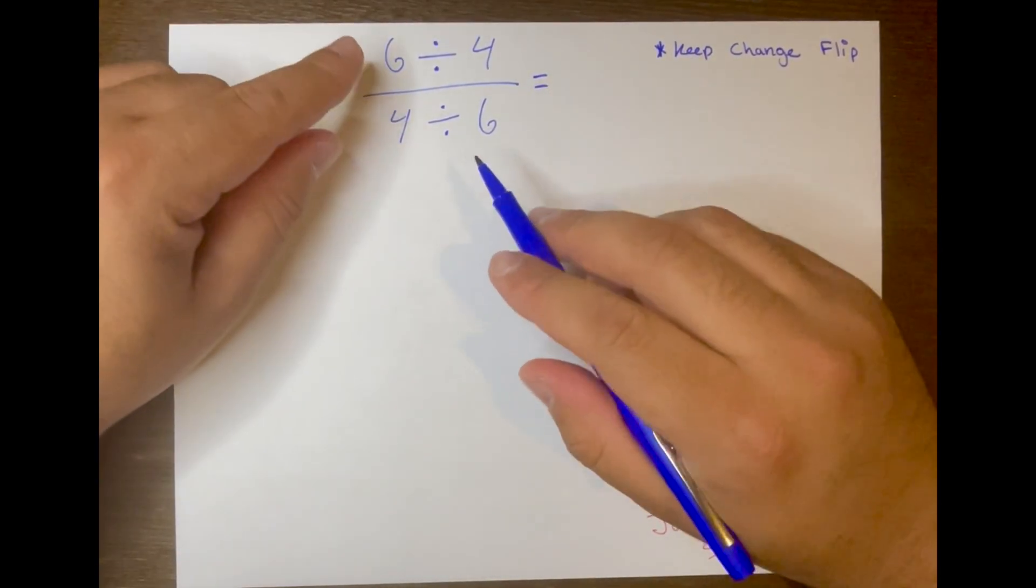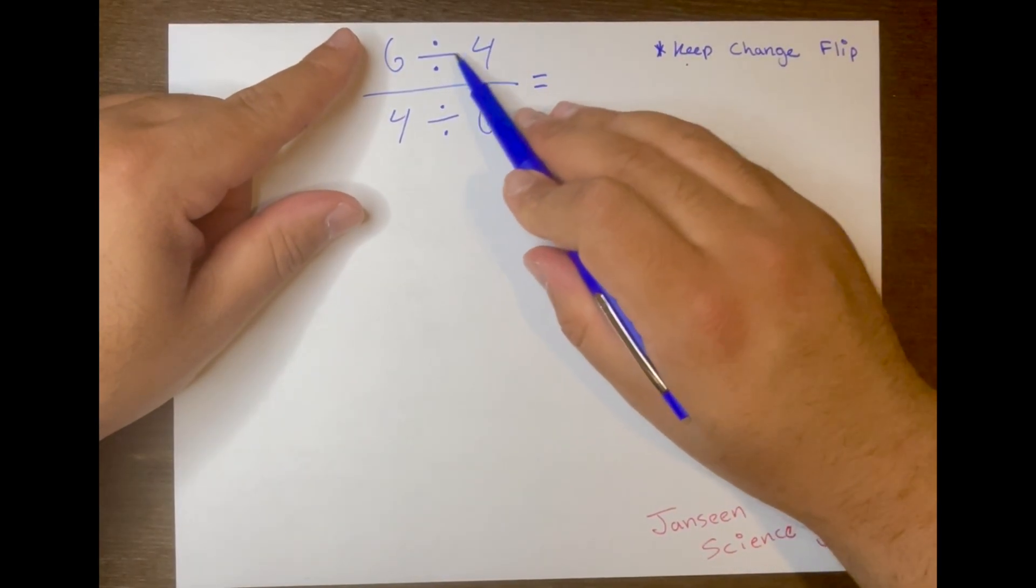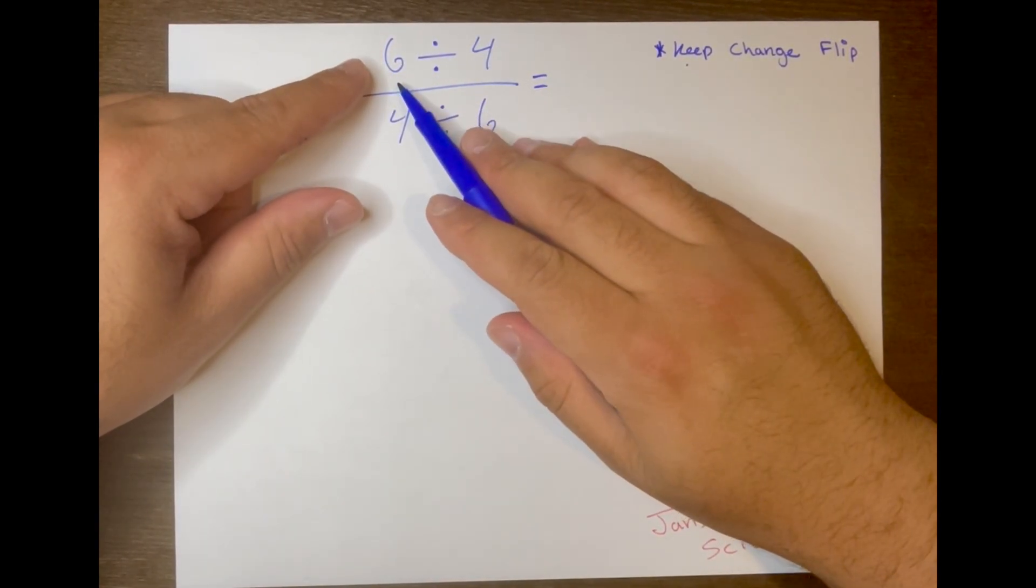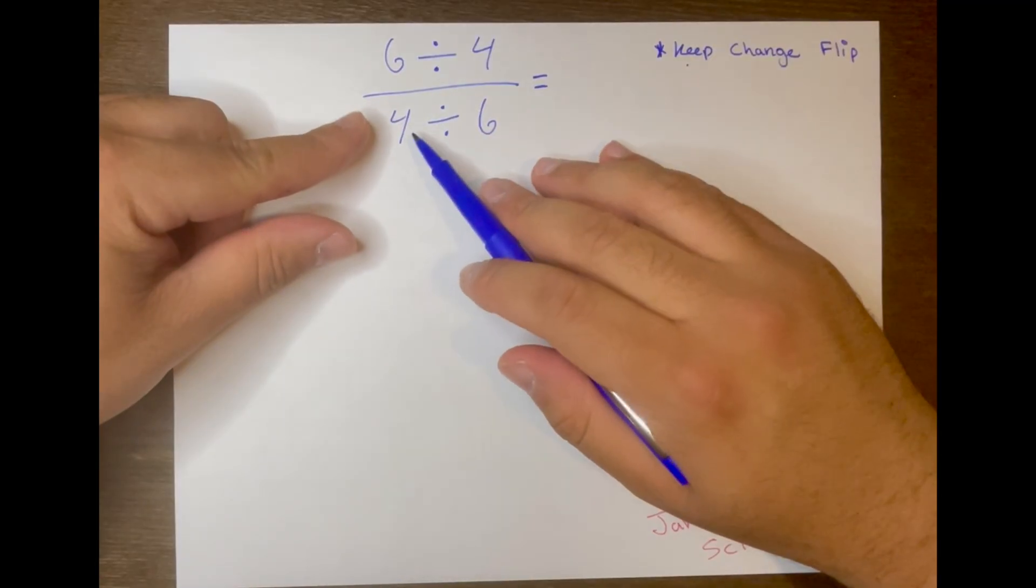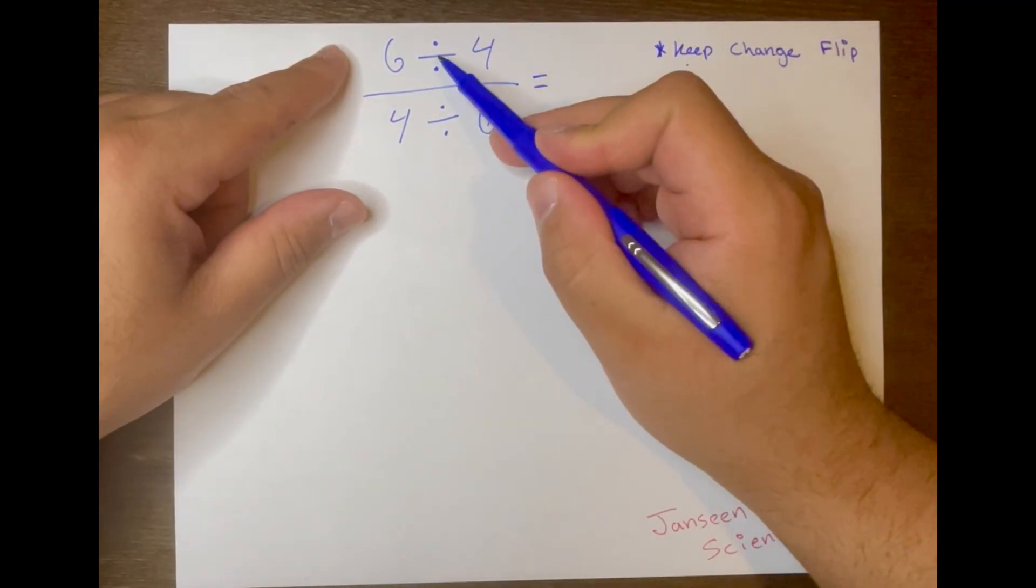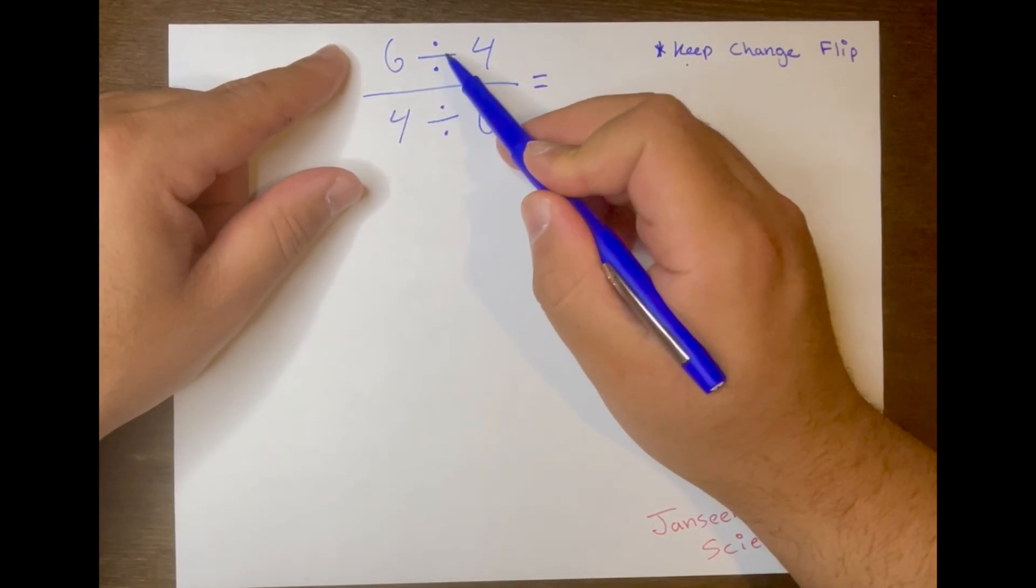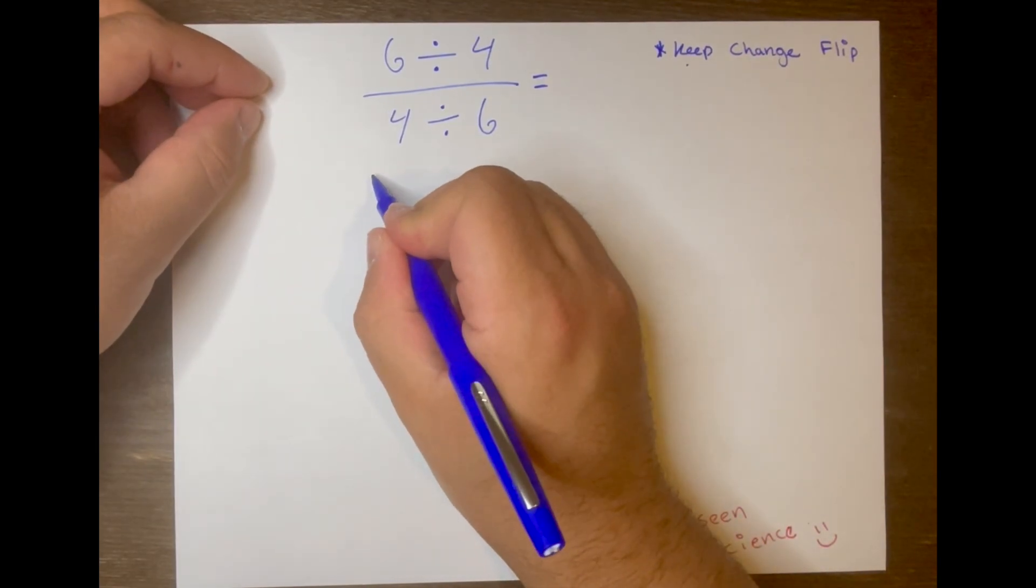Now, the first thing we're going to do is keep the top part of this fraction. So we have 6 divided by 4 over 4 divided by 6. We want to write 6 divided by 4 in fraction form like this.